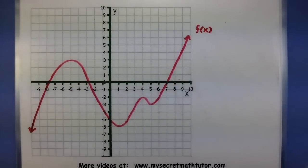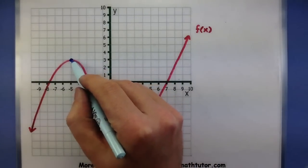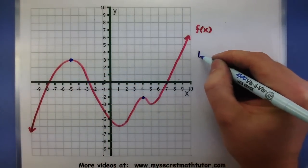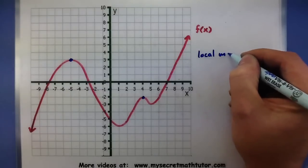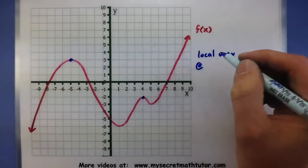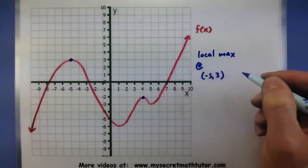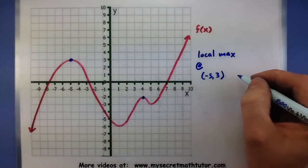This one's a bit more curvy. Let's see if we can find our high and low points. So I have one here. Another high point here. So local maximums, looks like we have one at (-5, 3). And another one at (4, -2).